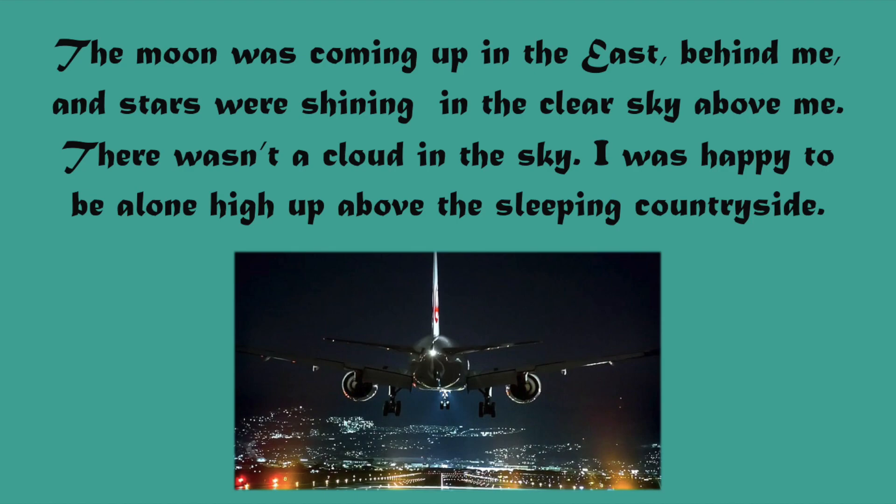The moon was coming up in the east behind me and stars were shining in the clear sky above me. There wasn't a cloud in the sky. Through the first line we can get the idea that the person was traveling towards the west direction, since the moon was rising in the east and east was behind him. It was a clear sky because the stars were shining bright and not even a single cloud was present.